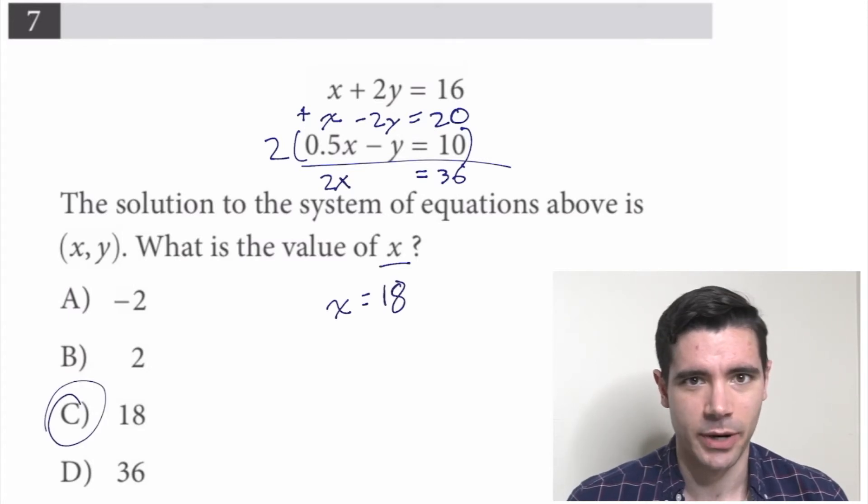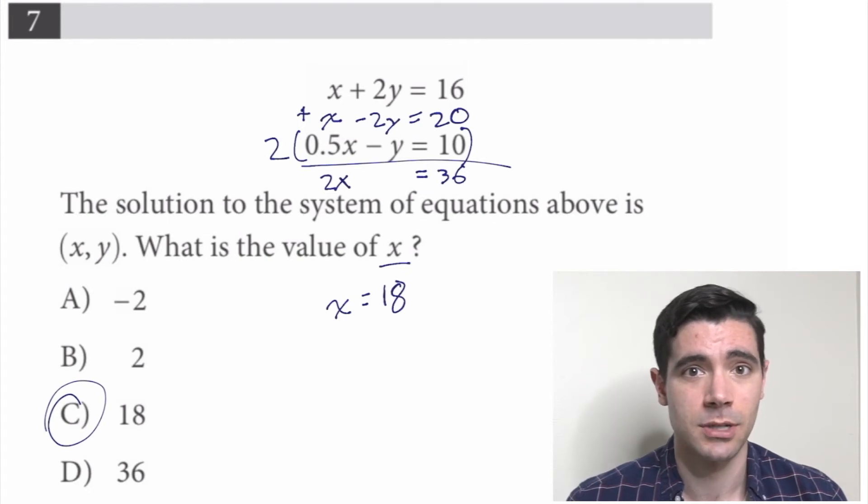Super cool. We could solve this problem another way, by isolating for one variable and then substituting that into the other equation. But you'll find on the SAT that combination is usually the most efficient way to solve a system of equations. We multiplied the bottom equation by 2, and then we were left with a simple algebraic equation with just x.